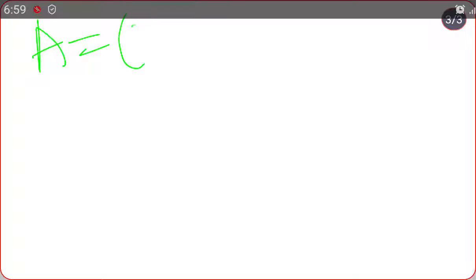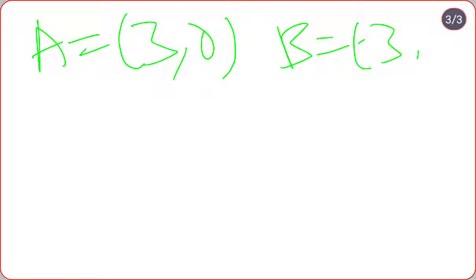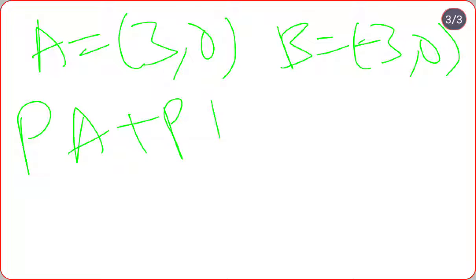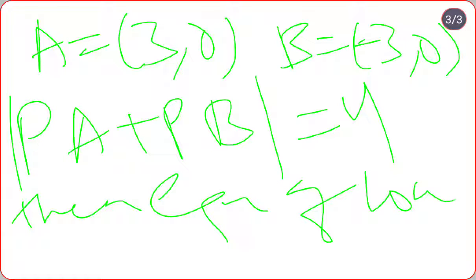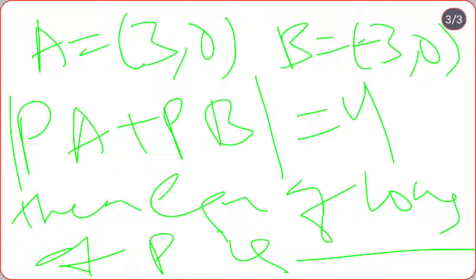Homework problem 1: A value is (3, 0), B value is (-3, 0), and |PA + PB| = 4. Find the equation of locus of P.